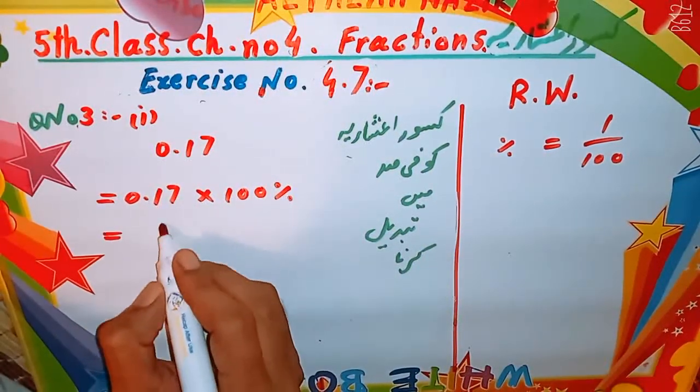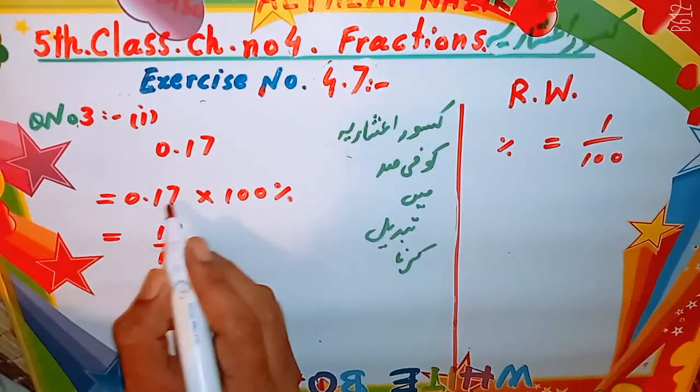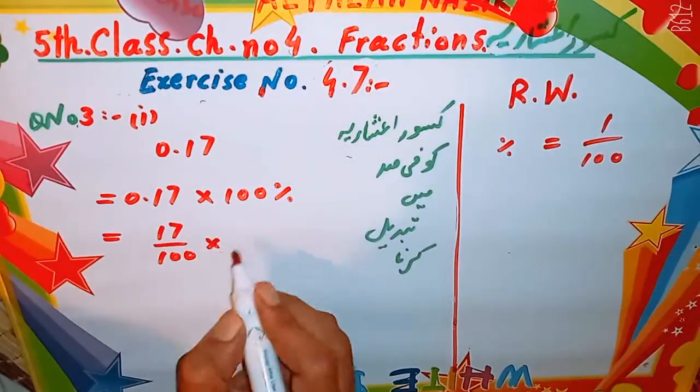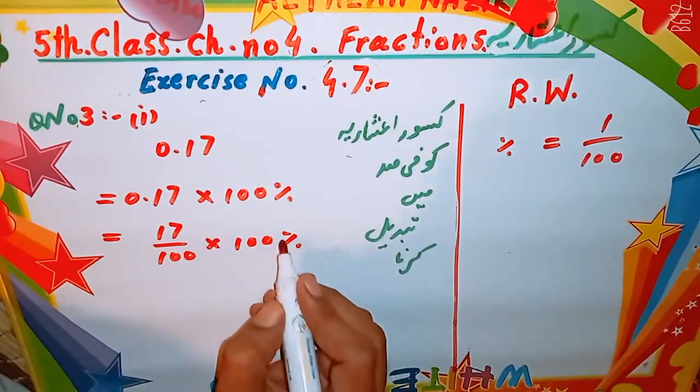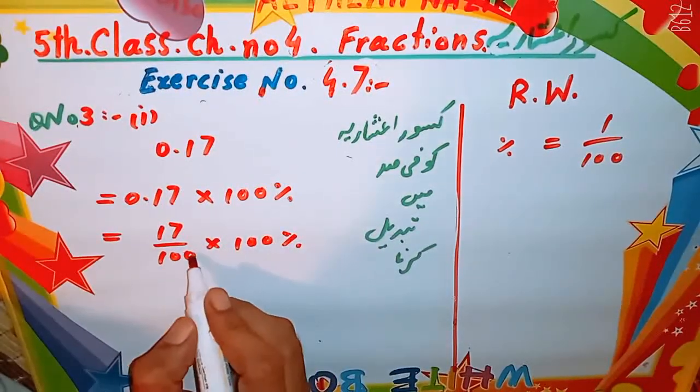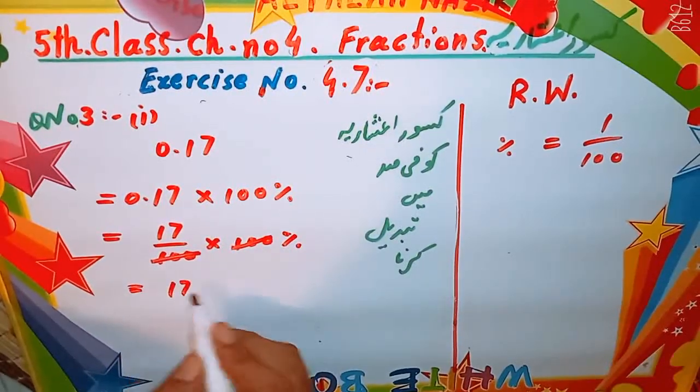اب کرنا کیا ہے؟ دیکھیں یہ بن جائے گا سترہ بٹا سو. اس کا اشاریہ ختم کریں گے. دو انچیں دو صفرے لگائیں گے. اور ساتھ سو پرسینٹ کے ساتھ ہم اس کو ملٹیپلائی کر رہے ہیں. تو سو کے ساتھ سو cancel ہو جائے گا. تو سترہ فیصد.